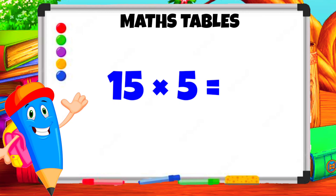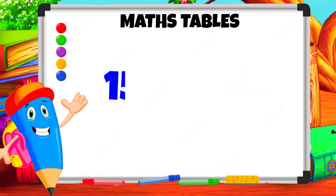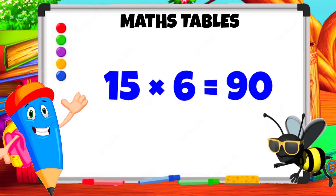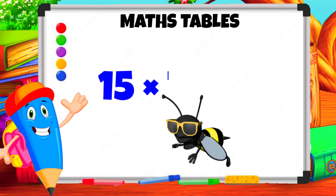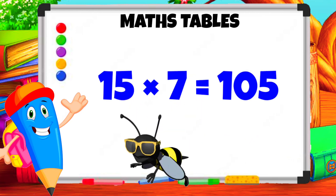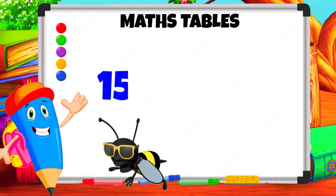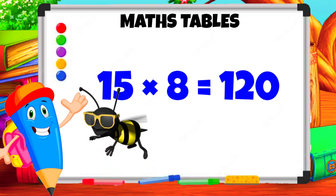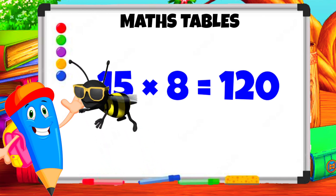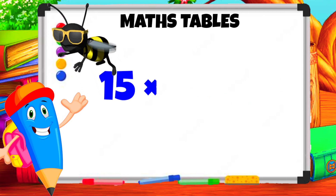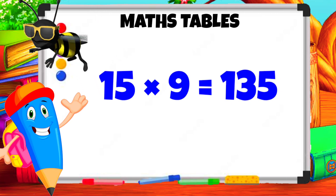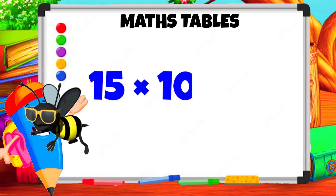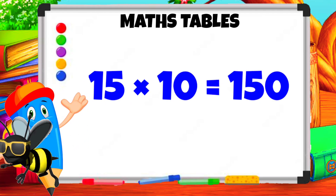15 5s are 75. 15 6s are 90. 15 7s are 105. 15 8s are 120. 15 9s are 135. 15 10s are 150.